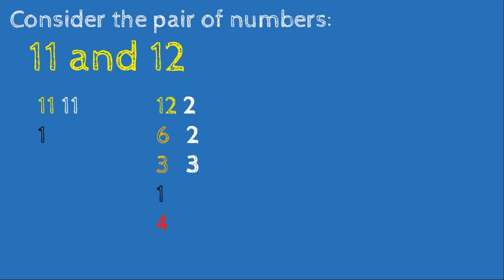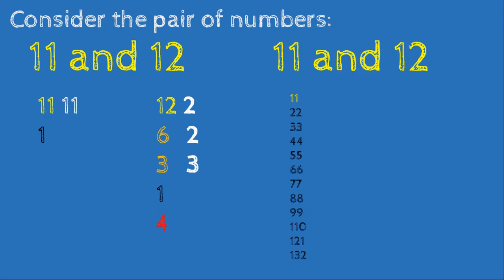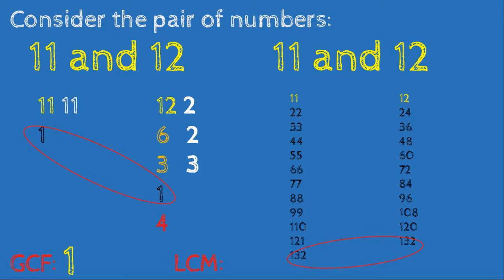We also need to find any missing factors by multiplying. 1 times 12 is 12. 3 times 4 is 12, so we add the factor 4. 6 times 2 is 12, and we have those. Multiples of 11: 11, 22, 33, 44, 55, 66, 77, 88, 99, 110, 121, 132. Multiples of 12: 12, 24, 36, 48, 60, 72. The greatest common factor of 11 and 12 is 1, and the least common multiple is 132.